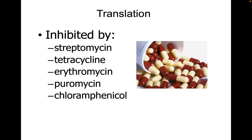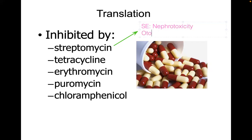Drugs that inhibit translation include streptomycin, tetracycline, erythromycin, puromycin, and chloramphenicol. Streptomycin is an aminoglycoside used second-line for antituberculosis; side effects include nephrotoxicity and ototoxicity. Tetracycline should not be given with antacids — chelation occurs. Chronic tetracycline use causes teeth discoloration.